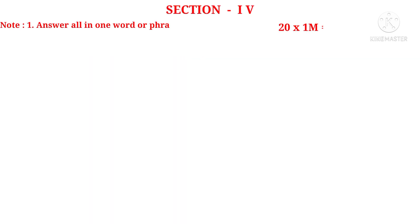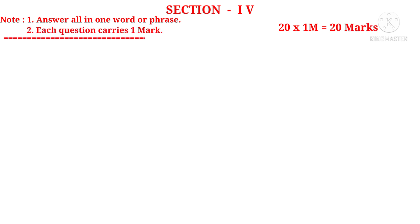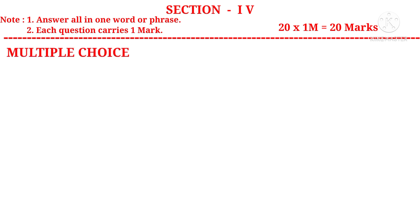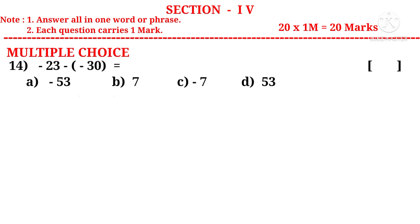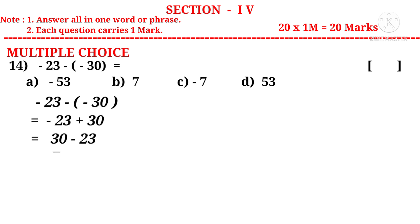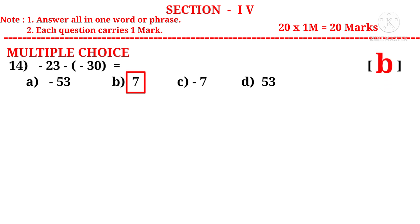Now let us see Section 4. Answer all in one word or phrase. Each question carries one mark. There are 20 questions, so 20 into 1 mark is 20 marks. Question 14 (multiple choice): Minus 23 minus (minus 30) is equal to — minus into minus becomes plus 30, which gives 30 minus 23 equals 7. The correct choice is B.